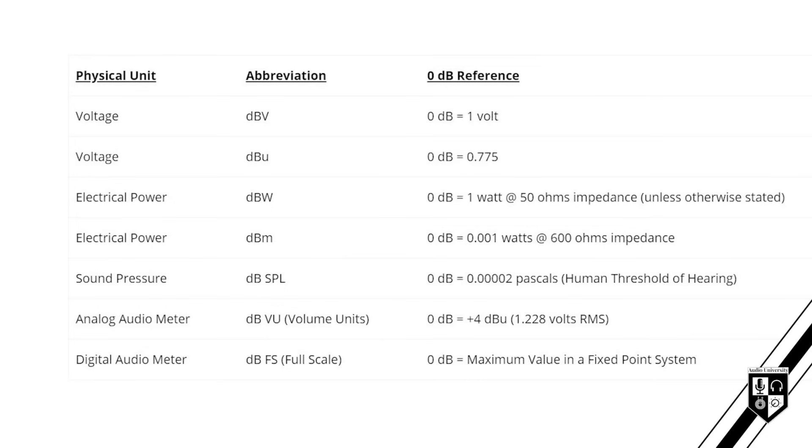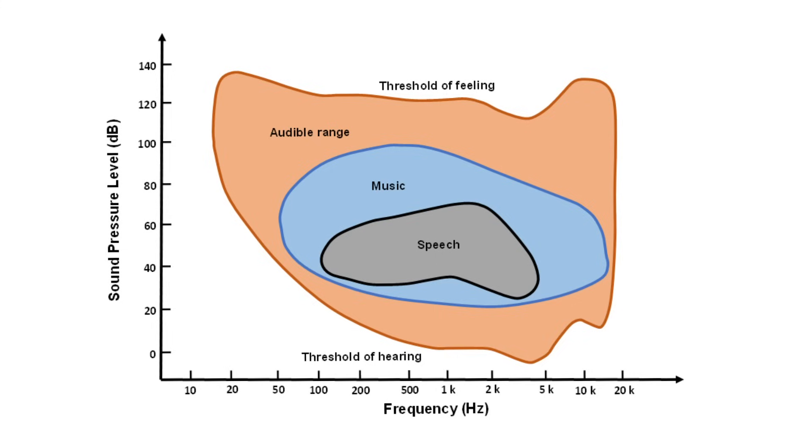For many applications of the decibel, there are standardized reference points for defining 0 dB in absolute terms, and each one has its own suffix — dBm, dBu, dBSPL, and so on. This chart defines the 0 dB reference point for a few common audio applications. Let's take a closer look at two of the most common applications of the decibel in audio production: sound pressure level, measured in dBSPL, and digital audio metering, measured in dB full-scale. 0 dBSPL represents the threshold of hearing, or the quietest sound humans can hear. Therefore, we know that 80 dBSPL is 80 decibels louder than the quietest sound humans can hear.